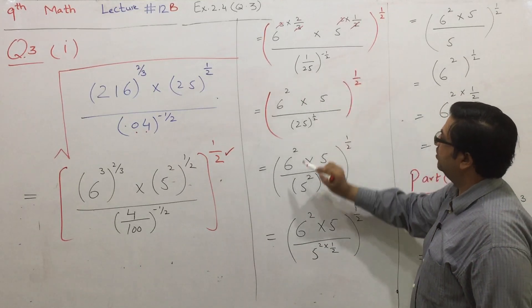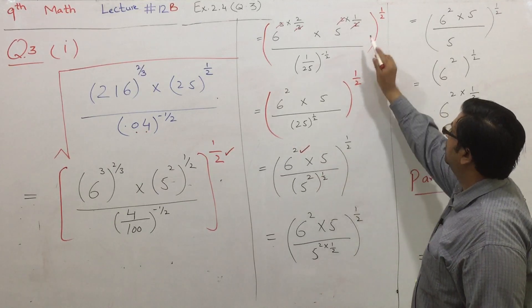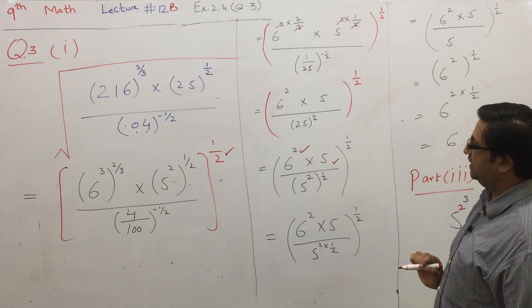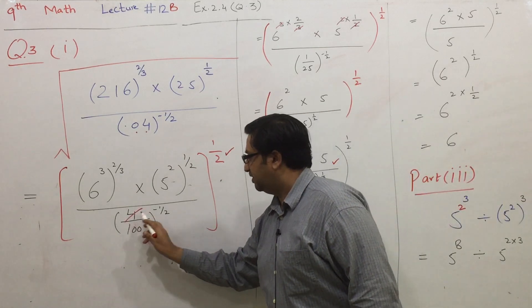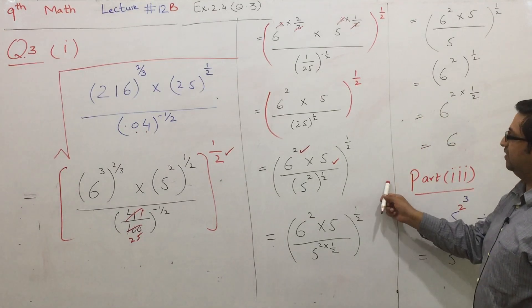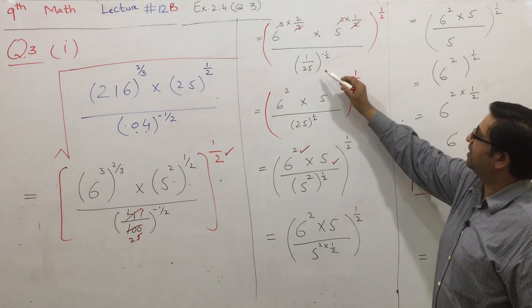5 to the power 1 equals 5. Once you take the power correctly, we have 6 squared times 5. 6 squared is 36, so 36 times 5.